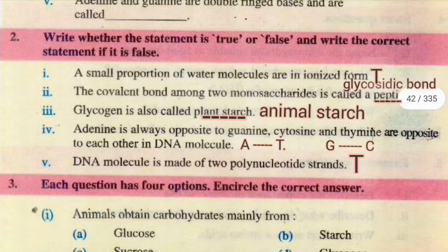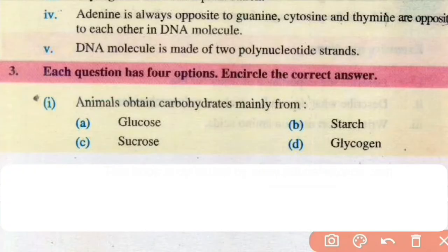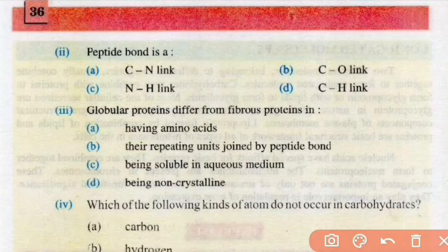Question number 3, each question has four options, encircle the correct answer. Number 1, animals obtain carbohydrates mainly from glucose, starch, sucrose, or glycogen. Carbohydrates ka jo main source hai wo starch hai, so right answer is B.